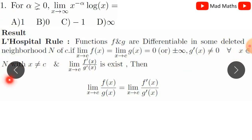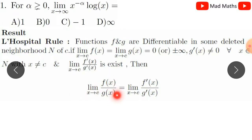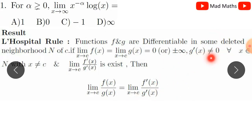The key conditions: at the particular point c, the limit must exist, the derivative of the corresponding function must exist, and the limit must exist. Also, g'(x) must be non-zero in the deleted neighborhood. If the limit of the ratio exists, then the limits are equal to each other.